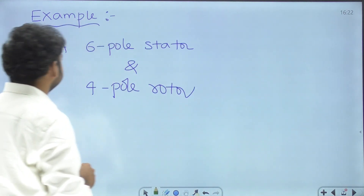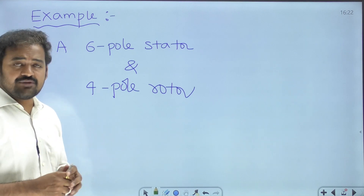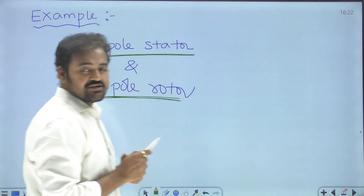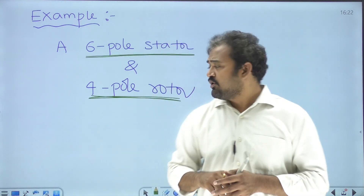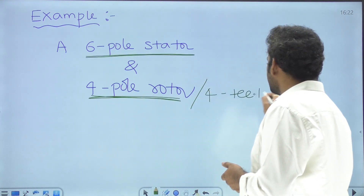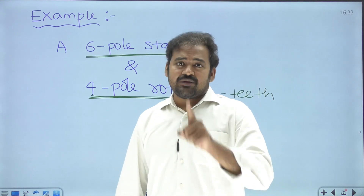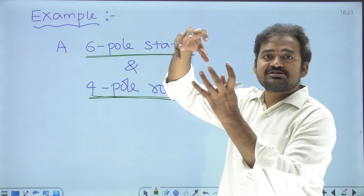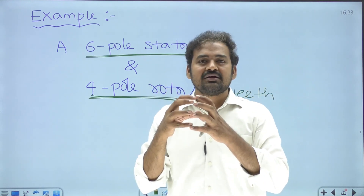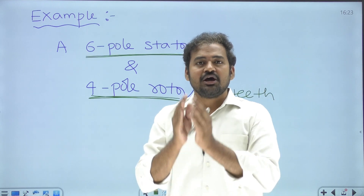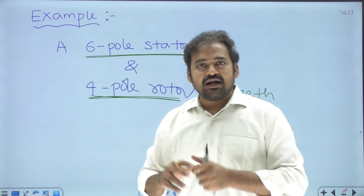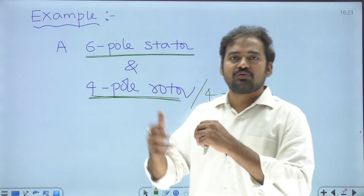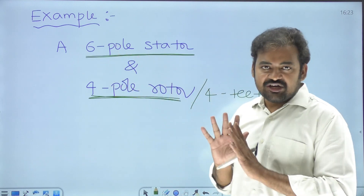Let us understand one example: a variable reluctance type stepper motor where the stator consists of six poles and the rotor consists of four poles. Four poles are equivalent to four teeth. Never design a stepper motor with the same number of teeth in the stator and rotor — if stator poles and rotor poles are equal, magnetic locking will occur and the rotor will not rotate. This is called cogging phenomena. So the number of poles must be different in stator and rotor.